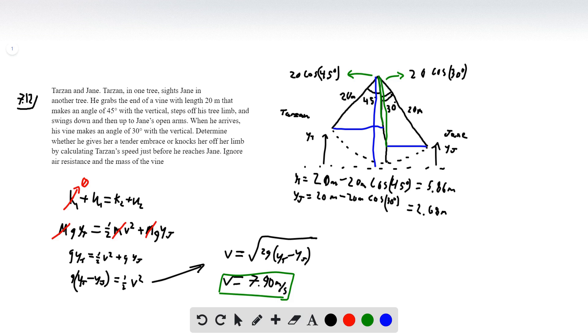So 7.9 meters per second. So the question is, is that a tender embrace or does that knock her off the limb? I'm going to use a little bit of my experience and intuition. I'm going to say 7.9 meters per second, I'm going to compare that to what the world record 100 meter pace is.